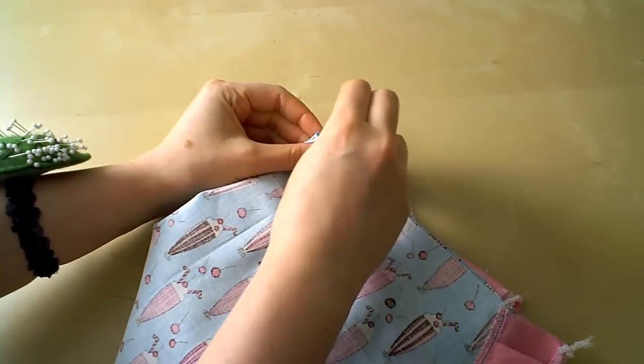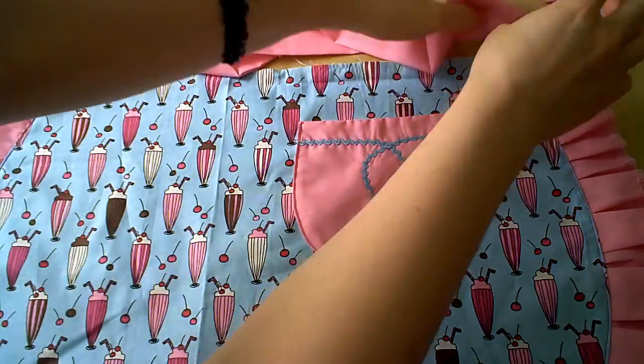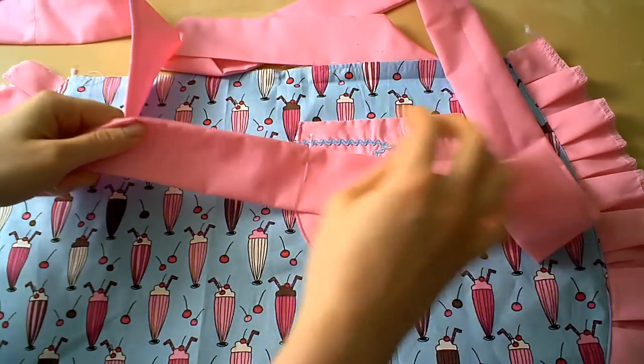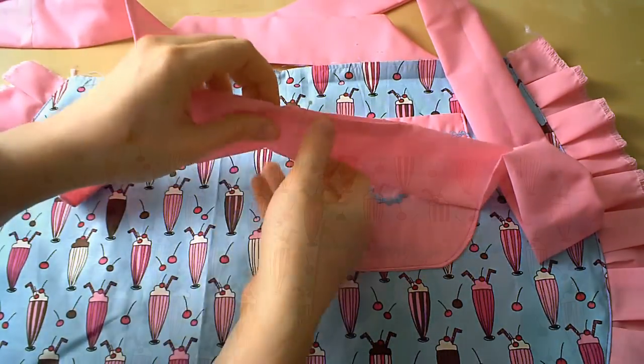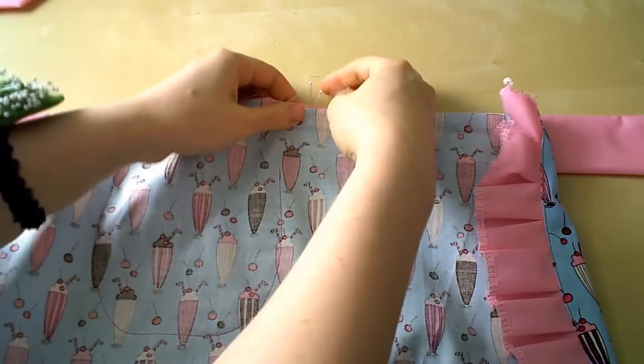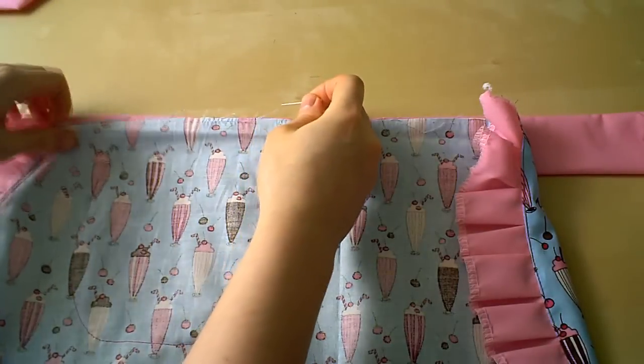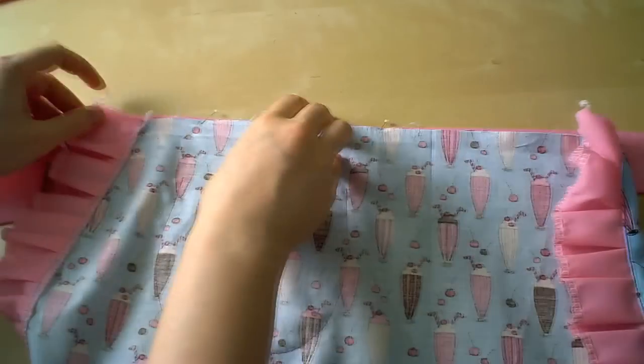We're getting close. We're going to fold the apron in half and mark the center of the top edge. Grab your waistband and mark the center the same way, making sure you're marking the edge with the seam. Line up the center of the waistband with the center of the apron and pin right sides together. While you're pinning, leave about a 1/8 of an inch gap from the top edge of the waistband to the apron piece, like so.